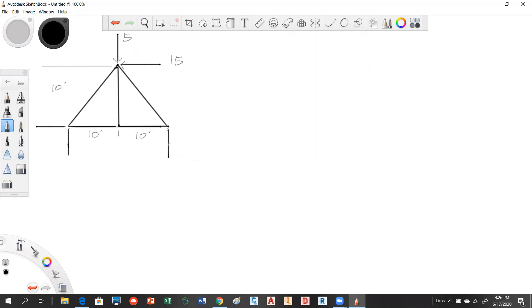You have external loads of 5 and 15 acting the way it's indicated. We have two reactions, a pin reaction and a roller. I'm going to go ahead and model the roller up. I'm going to call that reaction BV. We have a pin over here. We're going to call that reaction AV. And then we're going to model this reaction AH like that.